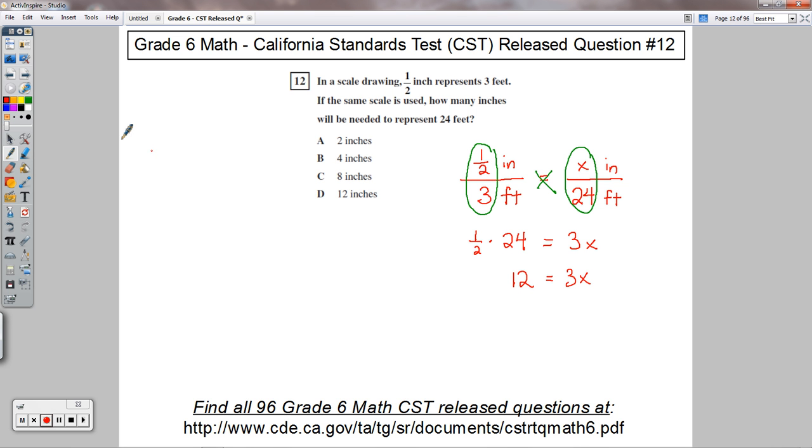And then if you divide both sides there by 3, you'll get your answer. So it looks like X equals 4. And this is in inches. This value right here was in inches, so we've got X is 4 inches.